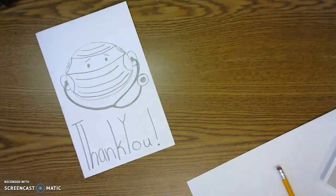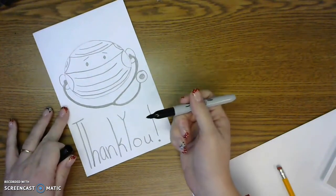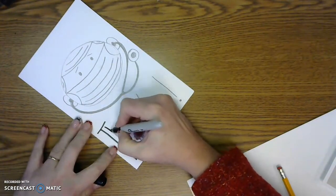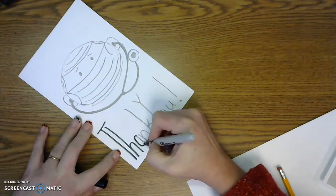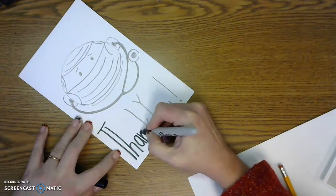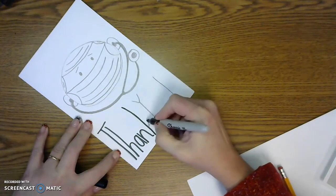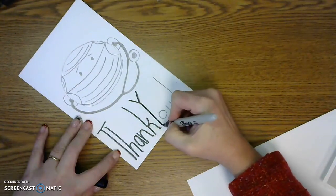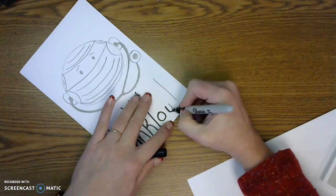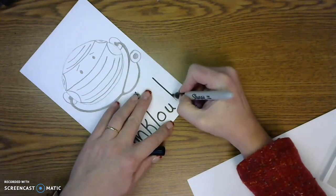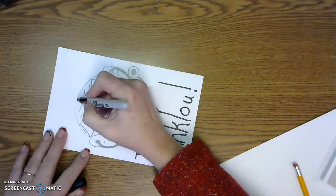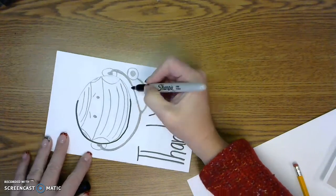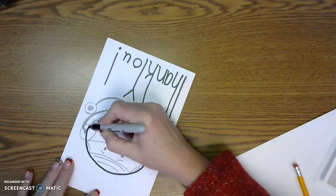And I also like to use a Sharpie pen to go over it after I'm done with my pencil because I think that makes it look really nice. You don't have to. You can go over it with crayon or marker or pencils or just leave it in pencil. But I like to go over it with a Sharpie.